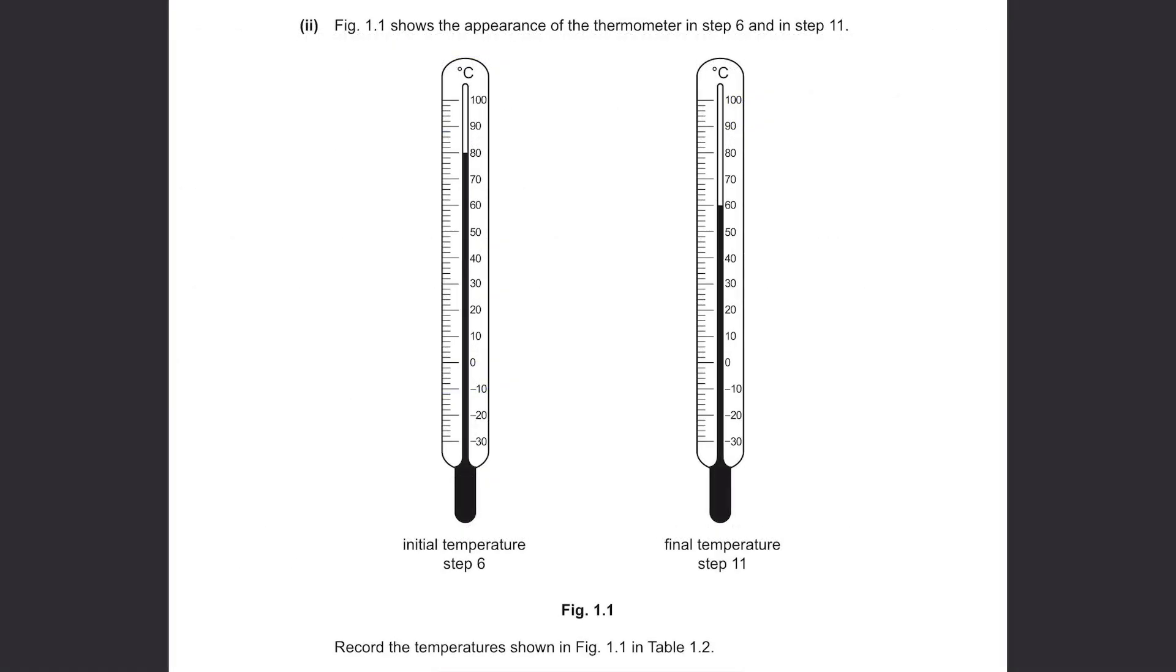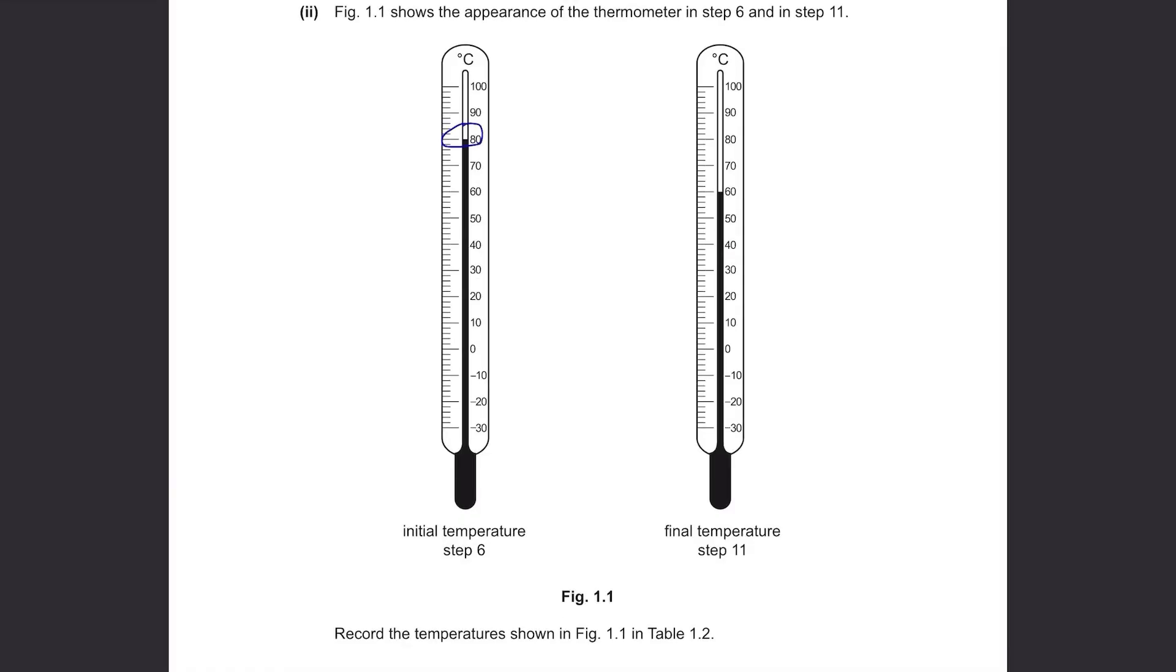Figure 1.1 shows the appearance of the thermometer in step 6 and in step 11. Record the temperatures shown in figure 1.1 in table 1.2. The left one is 80 degrees Celsius and the right one is 60 degrees Celsius.